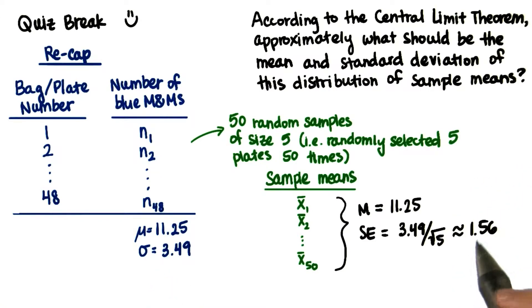So remember, since these are the theoretical mean and standard error based on all possible samples of size five from this population, they probably won't get exactly the same standard error as what we found, but they should come pretty close. So let's see what they got.